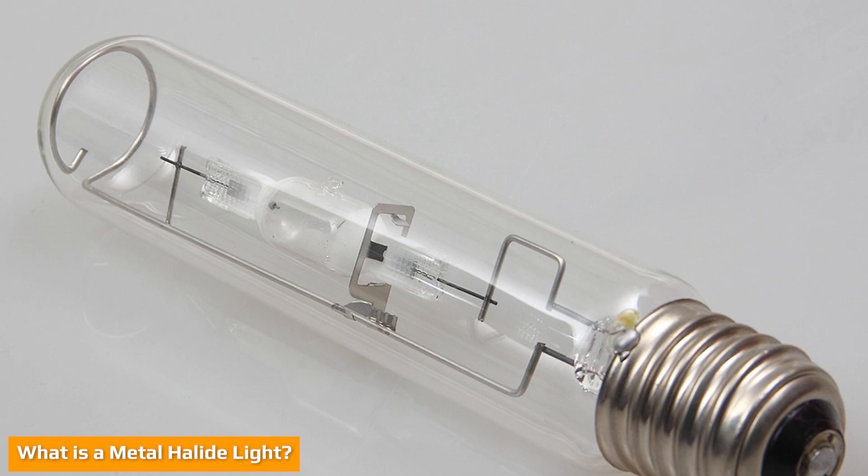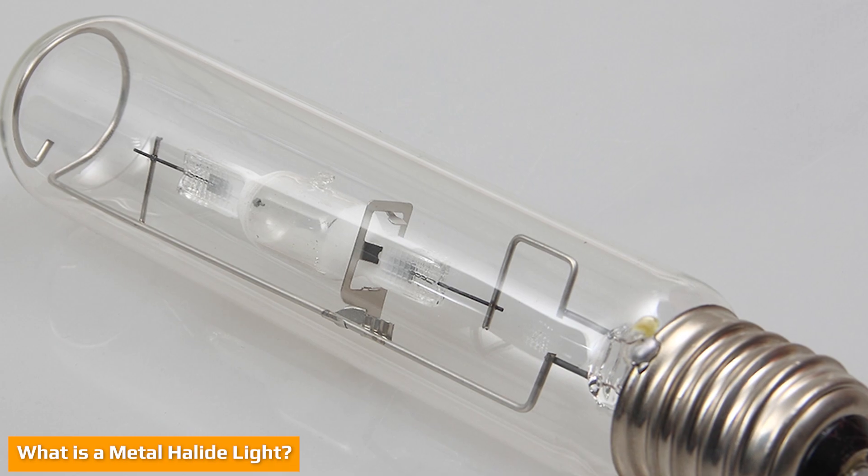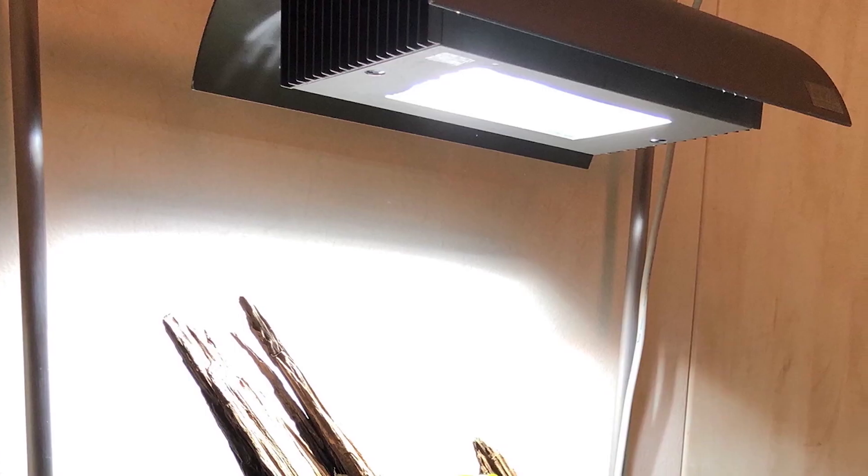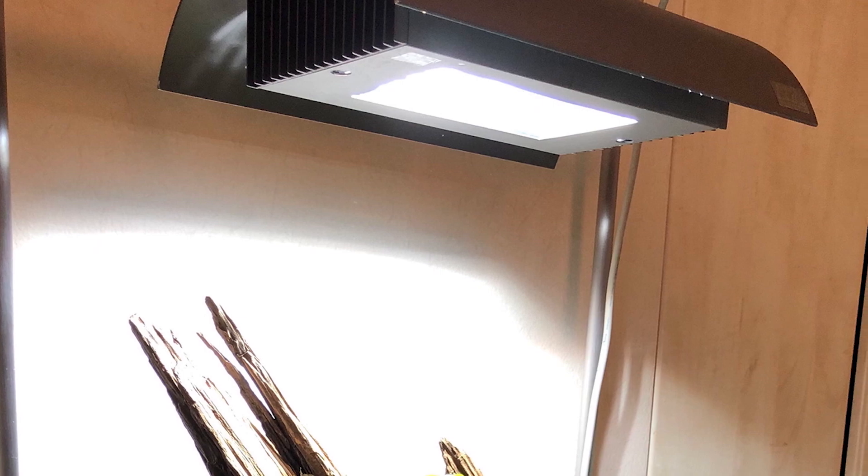Metal halides are compounds formed when metal and halogen elements combine. They include things like sodium chloride, salt, and uranium hexafluoride. Metal halide lamps produce light by passing an electric current through a combination of mercury and metal halide gas.